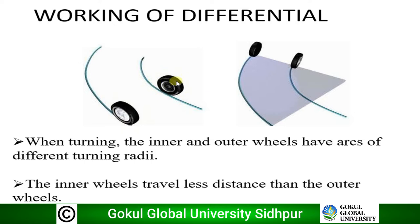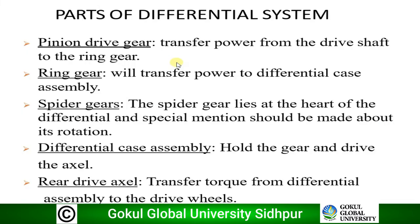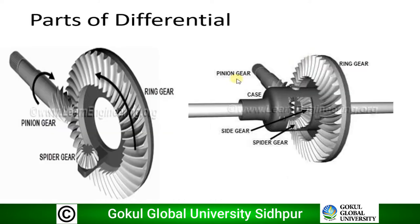If there is no differential, the inner wheel is spinning, the outer wheel is dragging, and it will create serious accidental damage. This is why the differential is required. The first part is the pinion drive gear, whose function is to transfer power from the drive shaft to the ring gear.